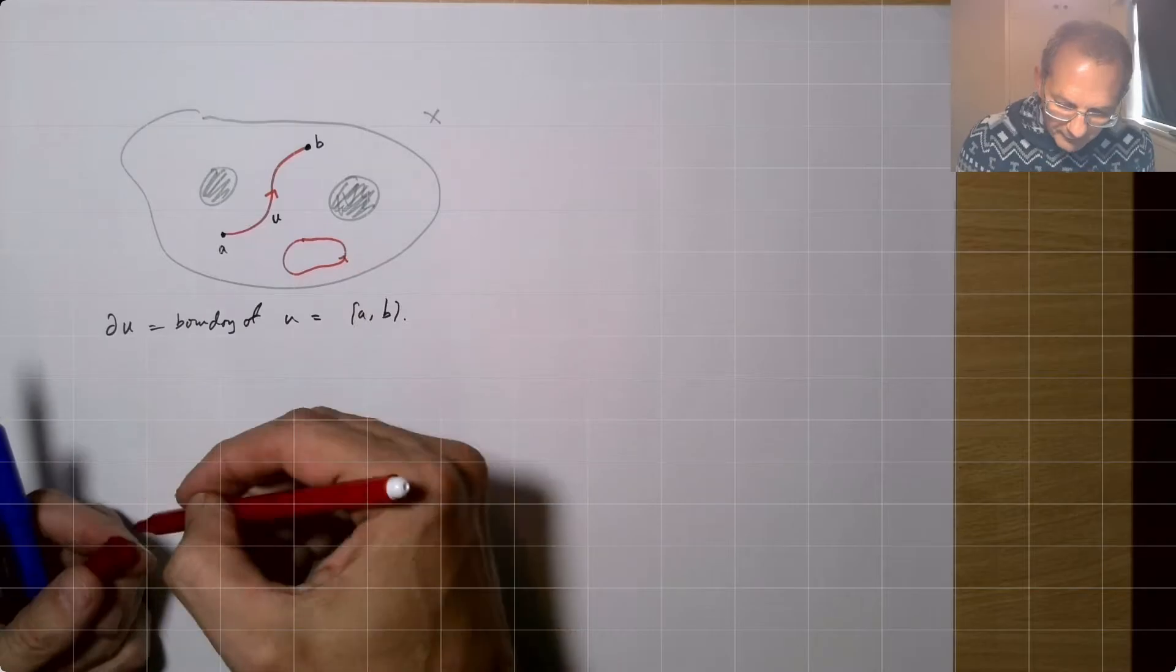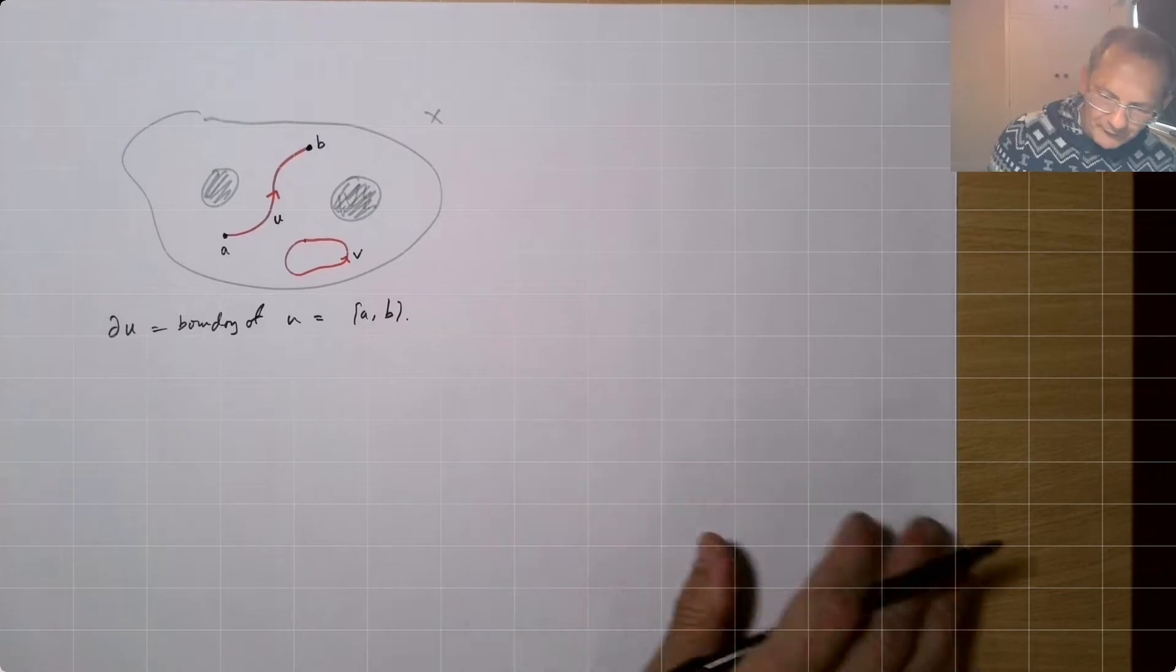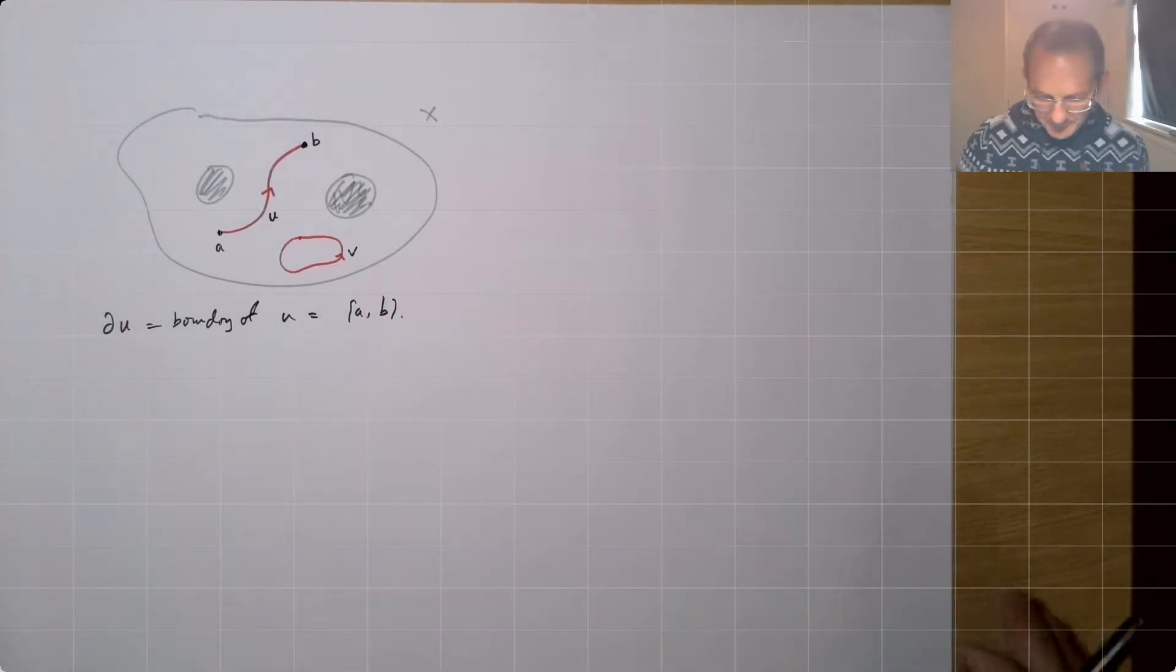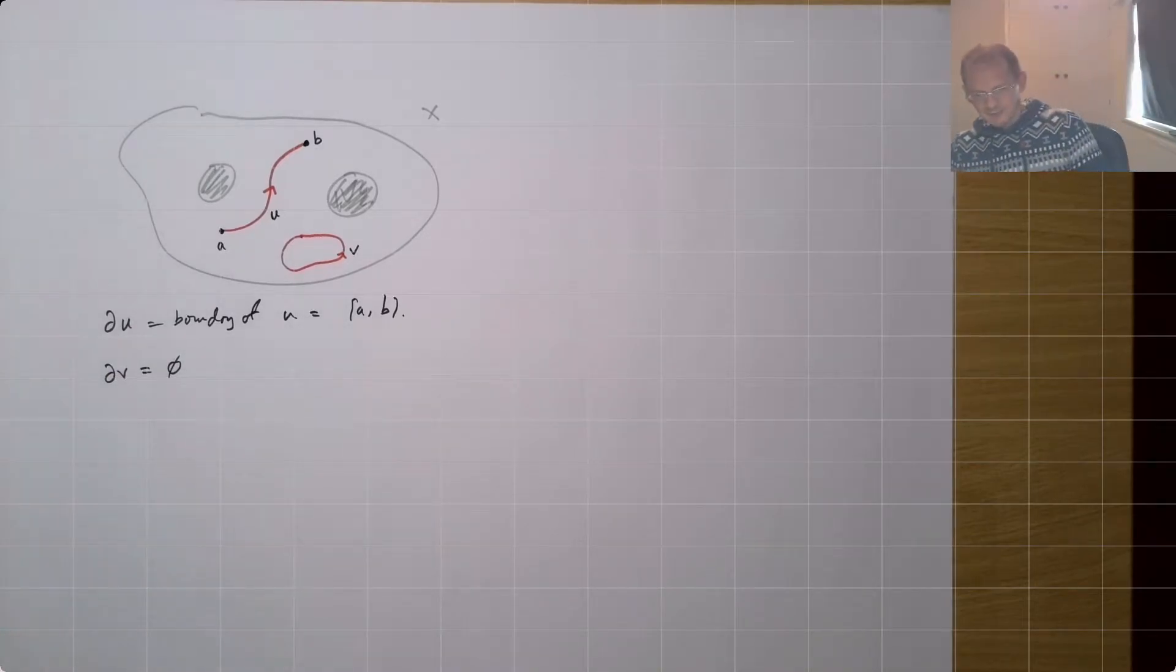This one's called V. So that, because it goes around a circle, it joins up on itself. It doesn't have any boundary at all. So the boundary of V is empty.